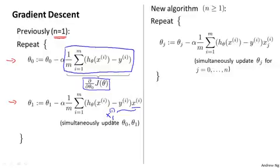Let's look at the new algorithm for when we have more than one feature, when the number of features n may be much larger than one. We get this update rule for gradient descent.